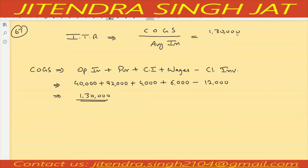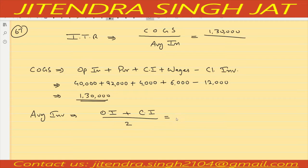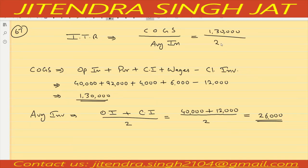Now calculate average inventory: Opening Inventory plus Closing Inventory divided by 2. Opening inventory is 40,000, closing inventory is 12,000, divided by 2. 52,000 divided by 2 equals 26,000. Average inventory is 26,000.